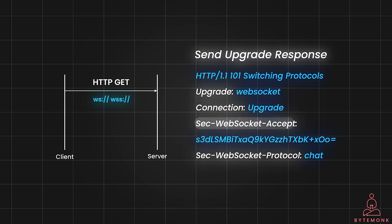If the Sec-WebSocket-Accept value does not match the expected value, or if the header field is missing, or if the HTTP status code is not 101, the connection will not be established and WebSocket frames will not be sent. If any code other than 101 is returned from the server, clients have to end the connection. The WebSocket handshake ensures a secure and authenticated connection by including a random key — Sec-WebSocket-Key — generated by the client and verified by the server through the Sec-WebSocket-Accept header. This handshake process paves the way for real-time two-way communication between client and server without the need for constant HTTP requests and responses.